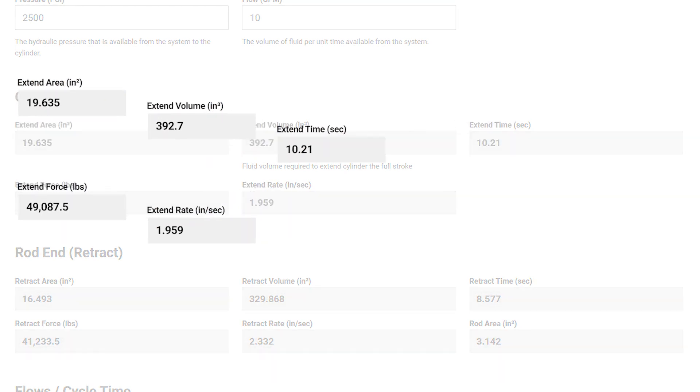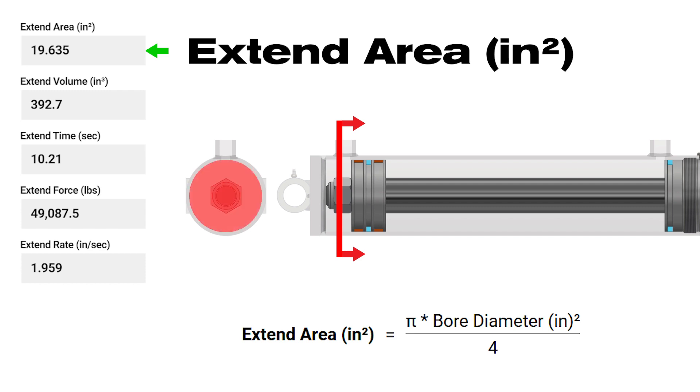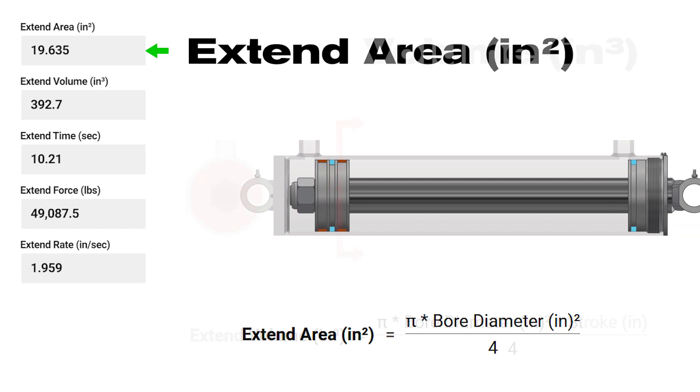First, the cap in. Extend area, measured in square inches. This is the area of the cylinder bore.